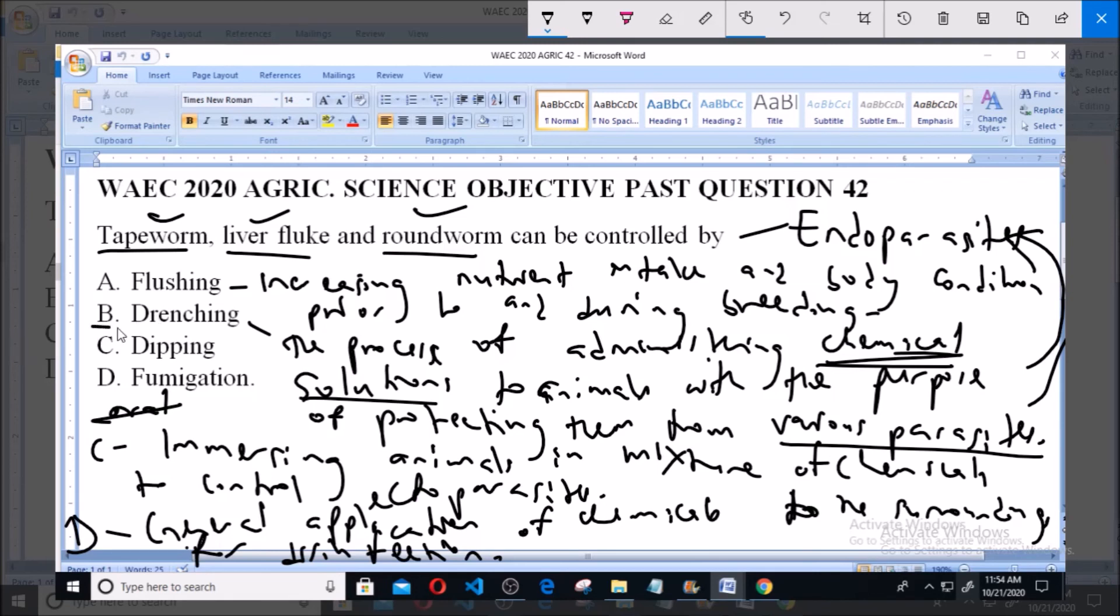So option B, drenching, is the procedure that is used to control endoparasites such as tapeworm, liver fluke, and roundworm. And it is the correct answer to this question.